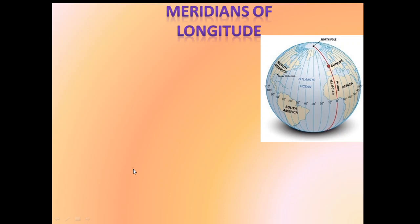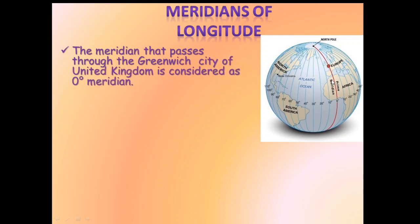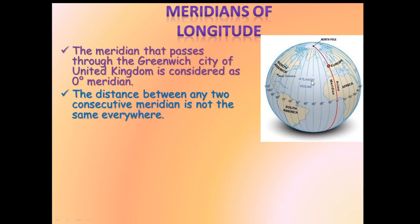Now let us learn some more things about meridians of longitude. The meridian that passes through the Greenwich city in the United Kingdom is considered the 0 degree meridian. The 0 degree meridian lies from the north pole — this red line — till the south pole on one side of the globe. Greenwich city lies in the United Kingdom. From here, we come to know about the timings of different places using the longitudes with the help of latitudes and their location. The distance between any two consecutive meridians is not the same everywhere — as in the orange example, the distance between two meridians compared with the distance over here is not the same: it is maximum there and minimum here.